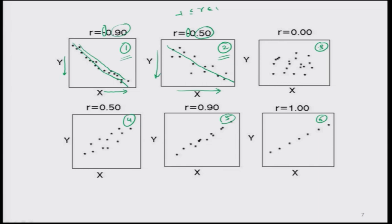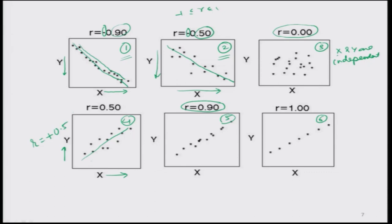In figure 3, there is no pattern of relationship between X and Y, so the value of the correlation coefficient is nearly 0 and we say X and Y are independent with no relationship. In figure 4, the trend is increasing — as values of X increase, values of Y also increase — and this is indicated by R = +0.5. The positive sign indicates the increasing trend.